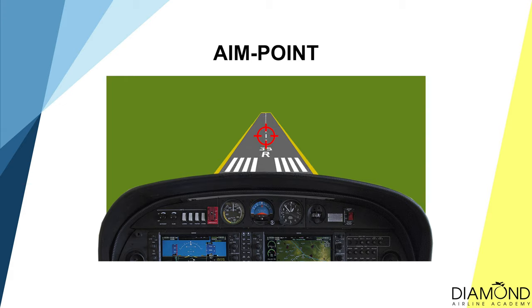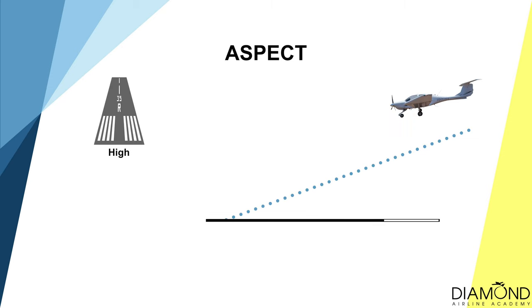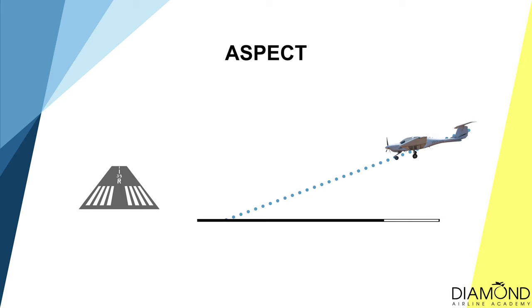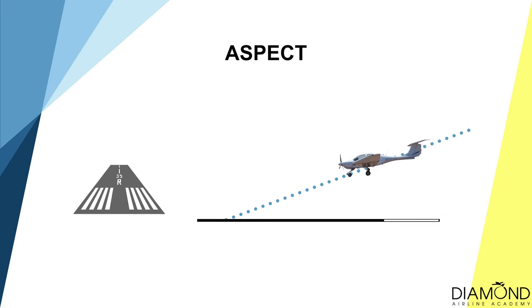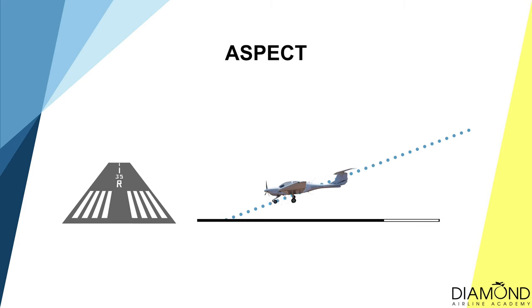That is how to align the aircraft with the runway laterally. To maintain a proper vertical profile, we look at aspect — the shape of the runway. By observing the shape of the runway, it tells us whether the aircraft is too high, too low, or just right. During the final leg, the shape of the runway should not be changing, only enlarging in size. If the aspect is getting narrower or wider, it means the aircraft is oscillating and not descending at a consistent rate.